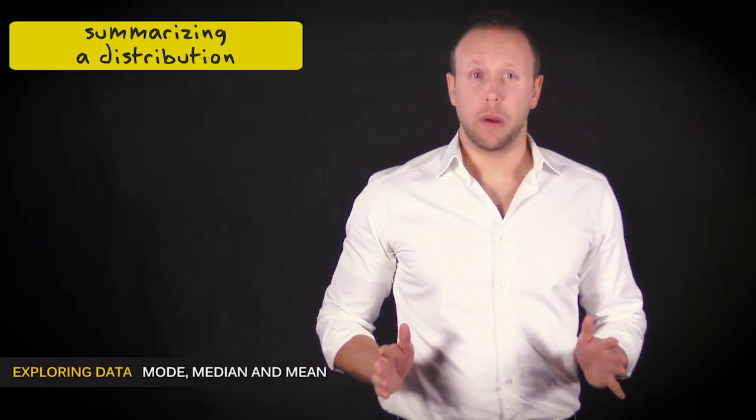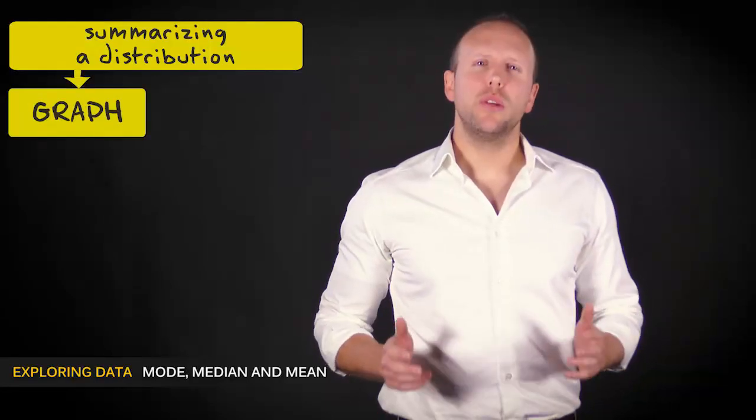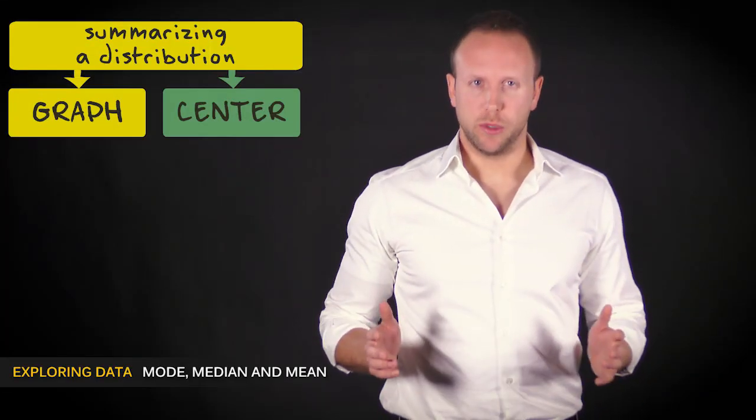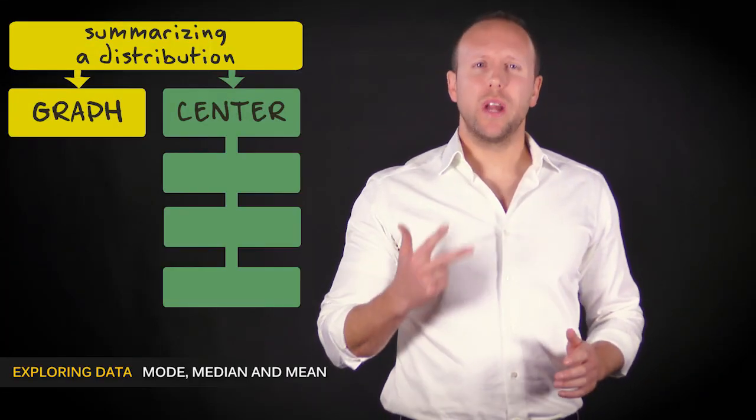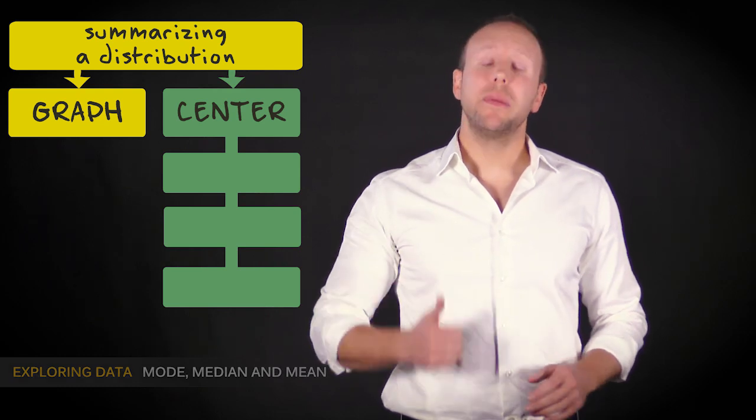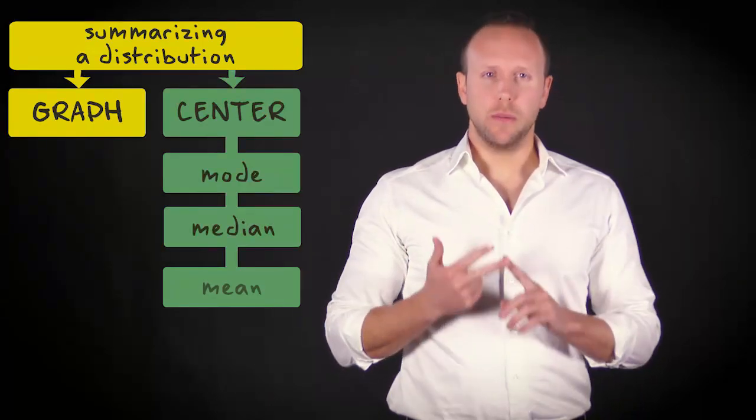Next to summarizing a distribution by means of graphs, it can also be useful to describe the center of your distribution. There are three main ways in which you can do that: by means of the mode, the median, and by means of the mean.